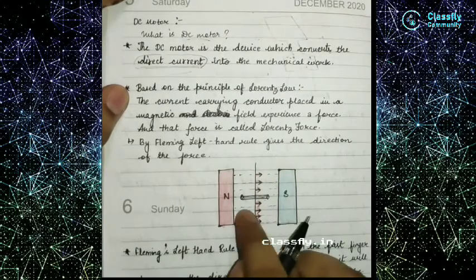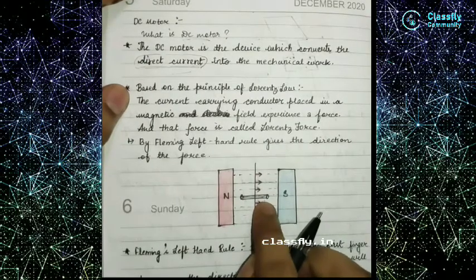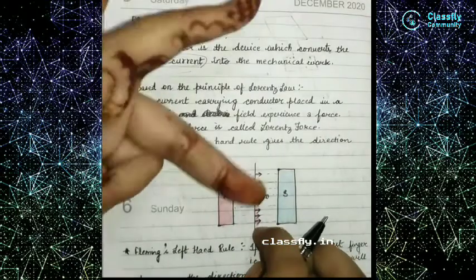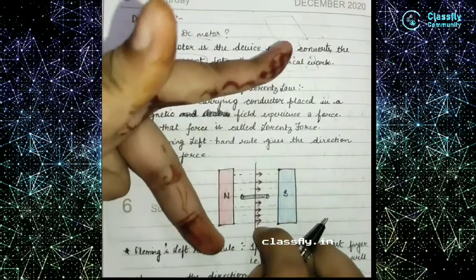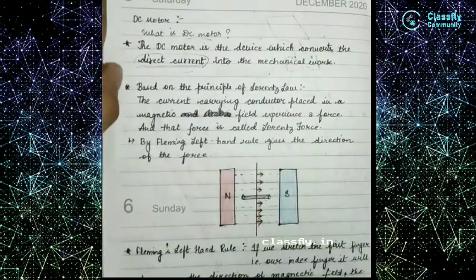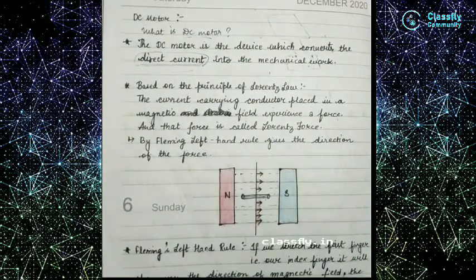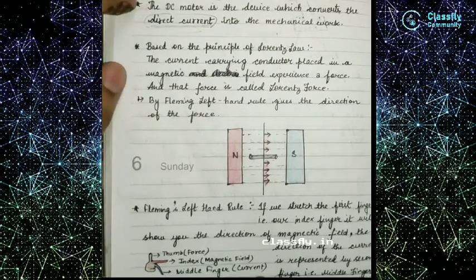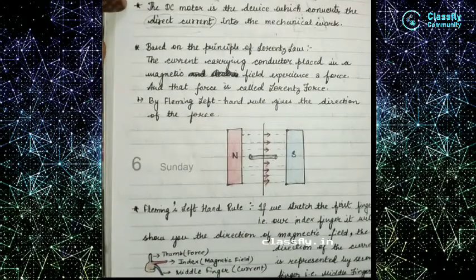That conductor will experience a torque or a force, and that force is known as the Lorentz force. We can determine the direction of the force using Fleming's left hand rule.